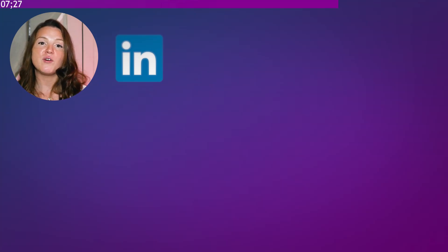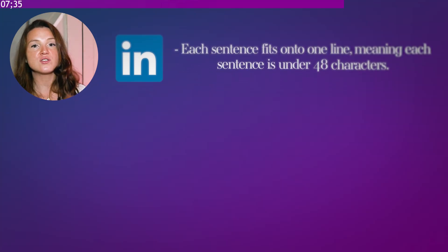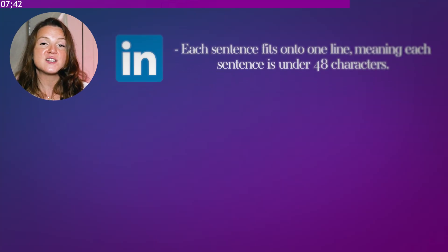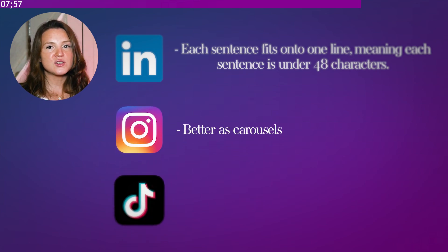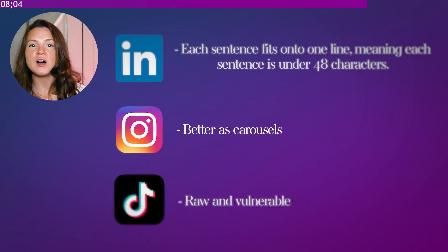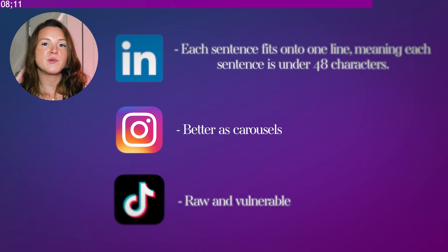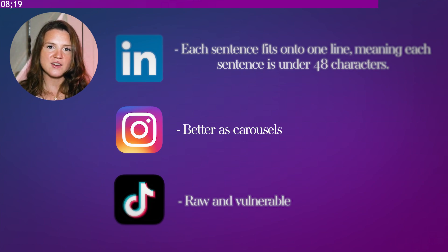For example, LinkedIn posts perform best when each sentence fits onto one line — meaning each sentence is under 48 characters. Instagram text posts work better as carousels. TikToks work better when scripts are more raw and vulnerable. First you set up your AI clone, then find proven frameworks already working on social media, use prompts to slot your knowledge into those frameworks, and then use prompts to turn that one post into multiple posts across all the different social platforms.